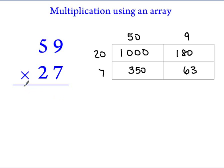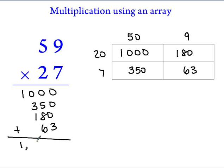We will then find the sum of our partial products: 1000, 350, 180, and 63. Our final product then is 1,593.